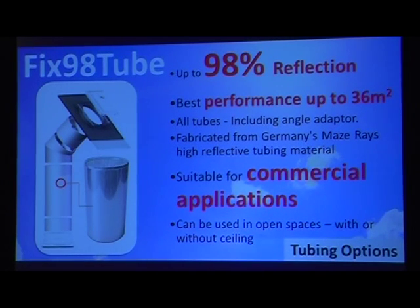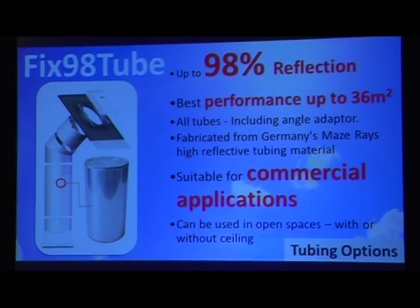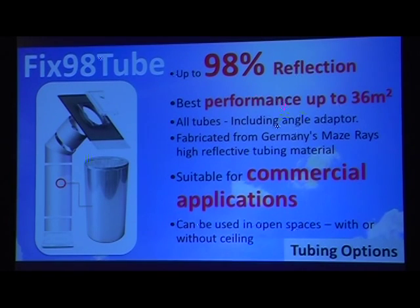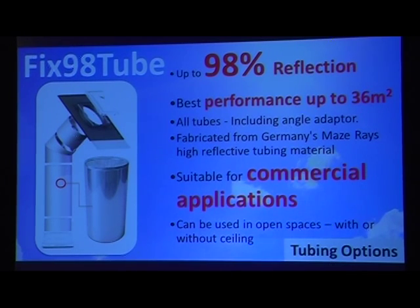We have two types of tube. The first is the Fixed 98 tube — why 98? Because it achieves up to 98% reflection of daylight from outside the building. Best performance covers up to 30 square metres. All tubes including angle adapters are fabricated in Germany. Suitable for commercial applications and can be used in open spaces with or without ceiling.